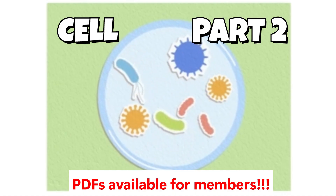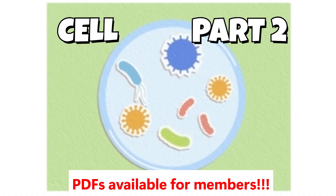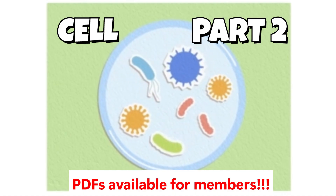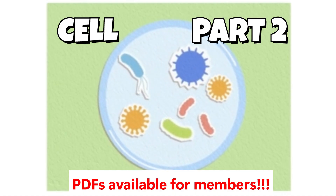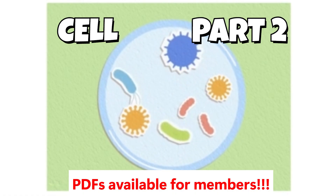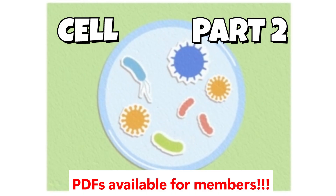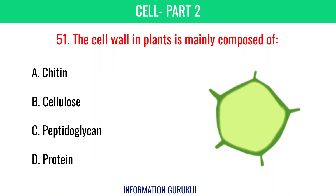In this video we will continue Part 2 of the first chapter of the biology series: Cell. The cell wall in plants is mainly composed of cellulose.